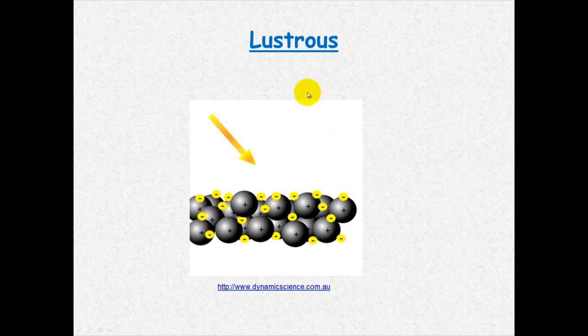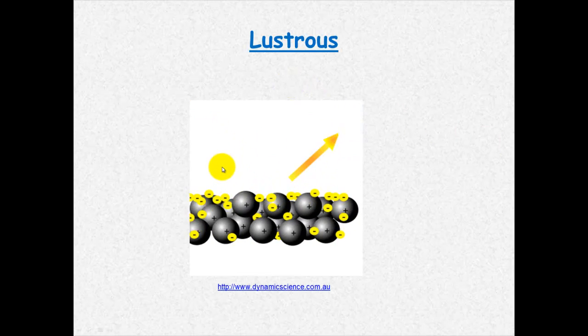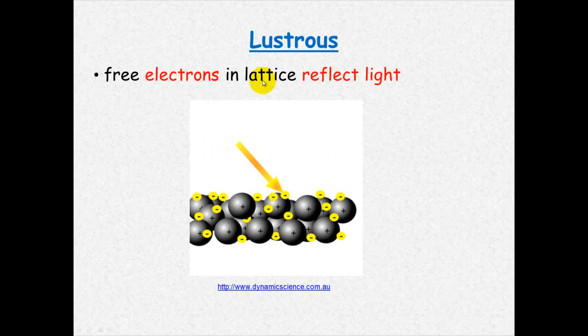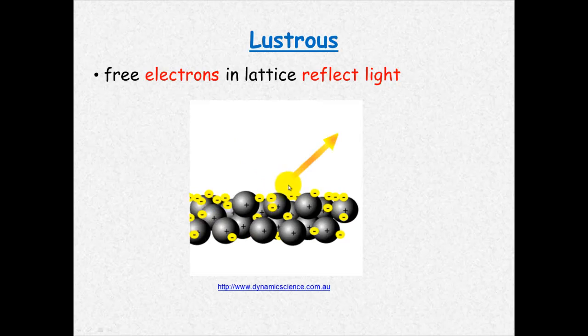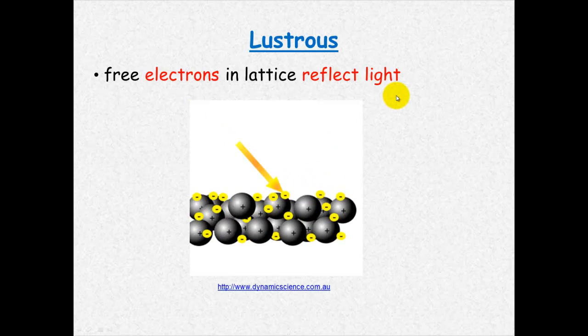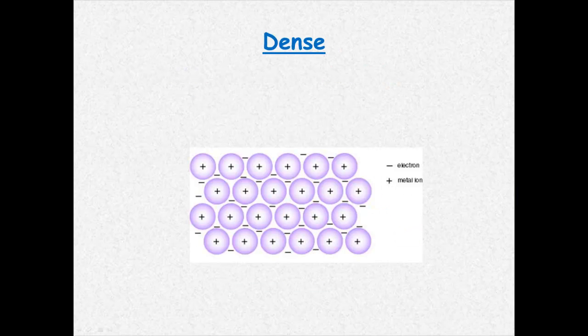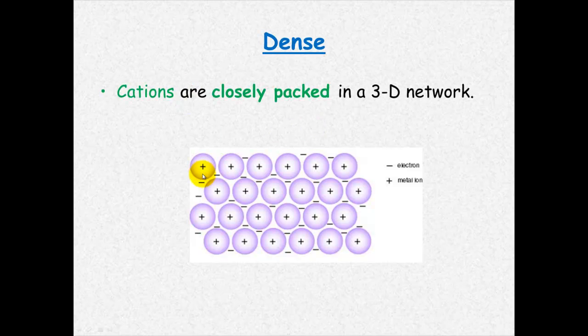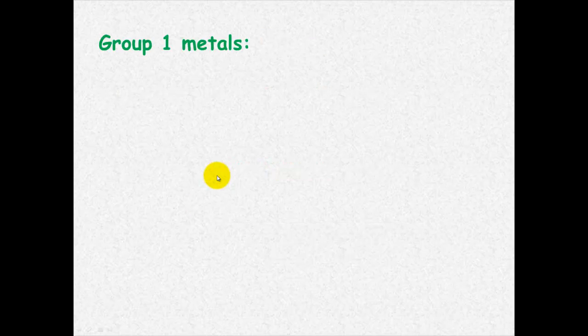And they are lustrous and the reason that they're lustrous is that the free electrons in the lattice can reflect light. You can see here the light bounces off, hits the free electrons and is reflected and that's what causes reflection. They're also dense and we've already pretty much discussed this. It's because of the electrostatic attraction between the cation and the delocalized electrons.